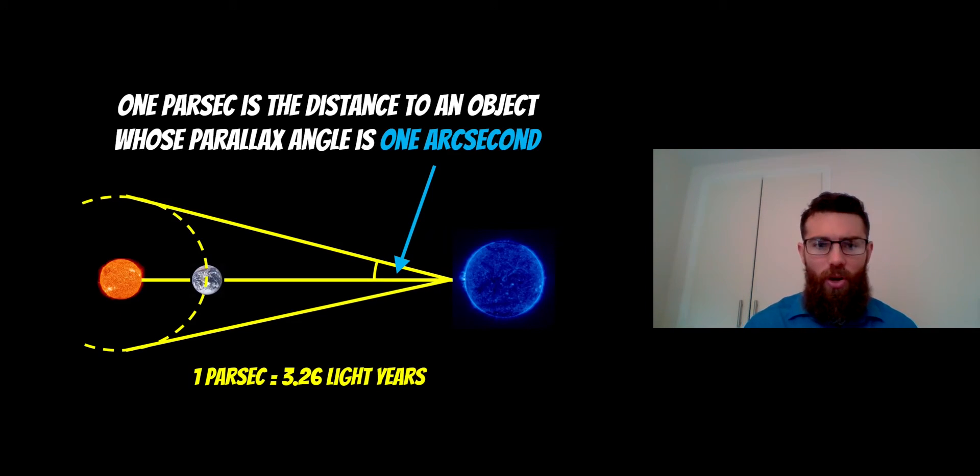If you're not familiar with a parsec, just to recap: one parsec is the distance to an object whose parallax angle is one arc second. The orbit of the Earth—if we take a measurement six months apart, the Earth has moved about 2 AU. If you get a one arc second parallax angle, the distance that subtends is one parsec, which is the same as 3.26 light years—the distance that light travels in that time period.